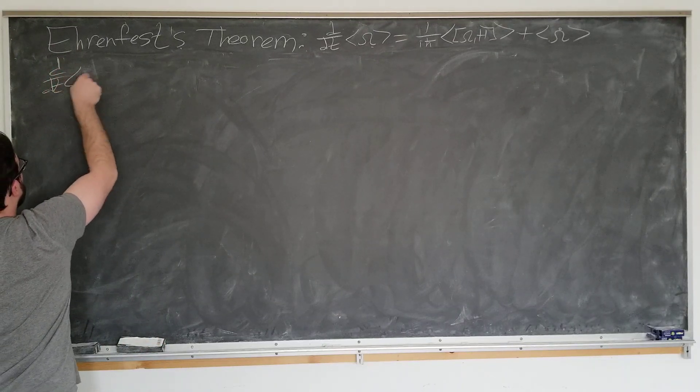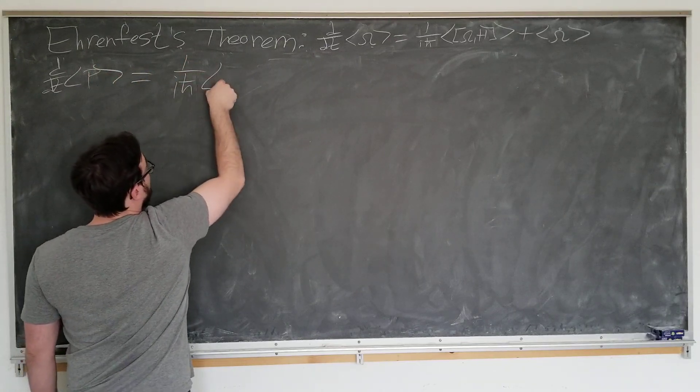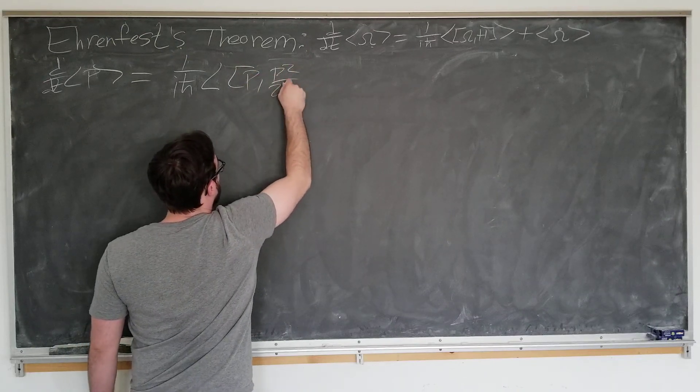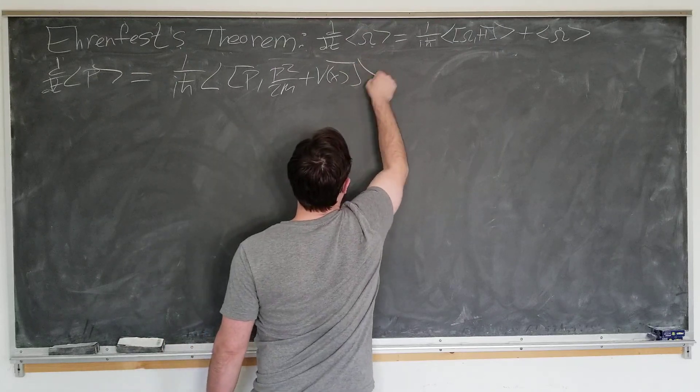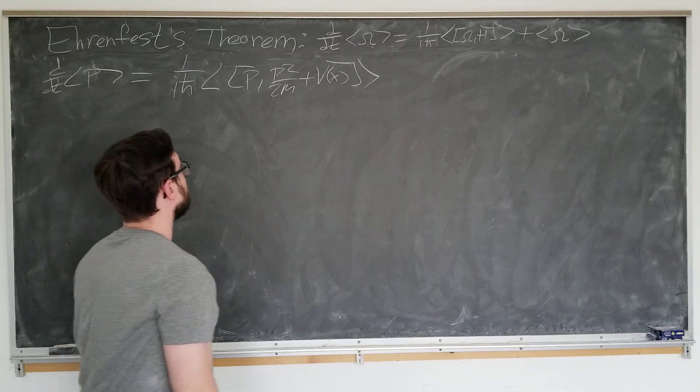d by dt expectation value of p is equal to 1 over i h bar, expectation value of p with p squared over 2m plus v. And again, that p dot is going to be 0, since there's no time here.